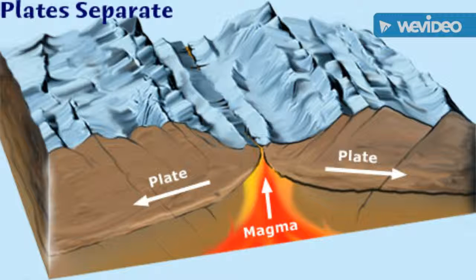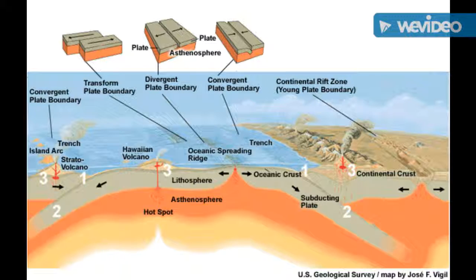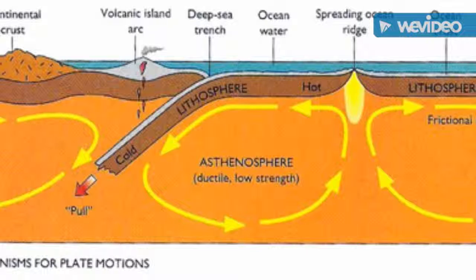Wegener didn't have anything to explain how the continents were once formed as one and drifted to what they are now. But scientists have since come up with this theory, called plate tectonics.